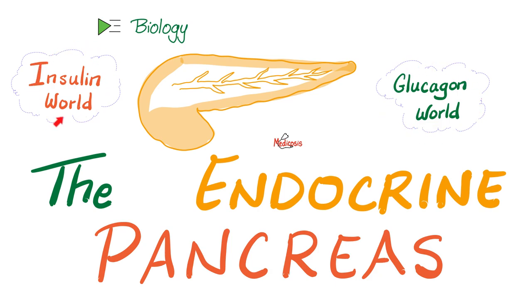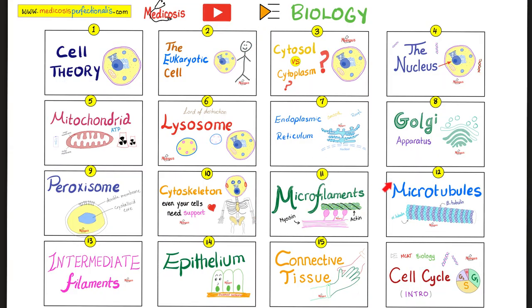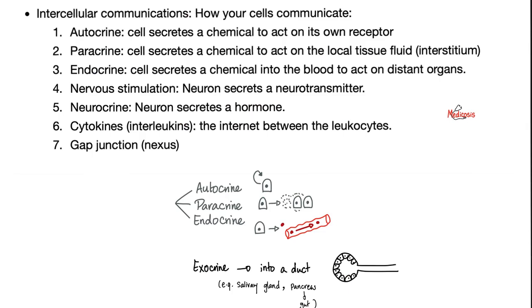Insulin is anabolic. Glucagon is catabolic, yet both of them come from the pancreas. This is my biology playlist — please watch these videos in order.